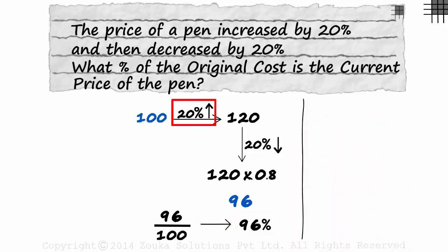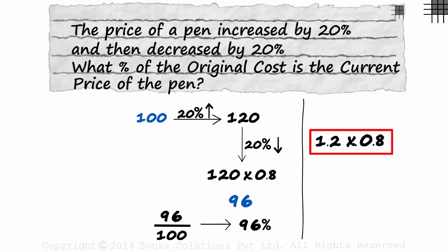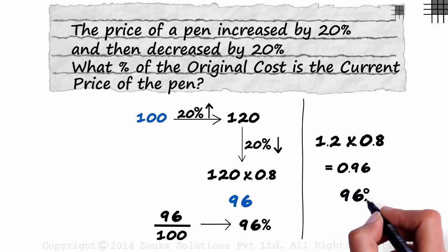A 20% increase would be 1.2 and a 20% decrease would be 0.8. This product will give us 0.96. This actually tells us two things. First, 96% of the original cost. And second, it is a 4% decrease.